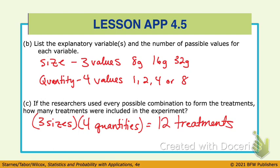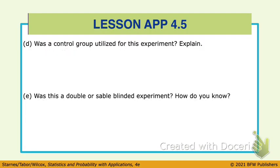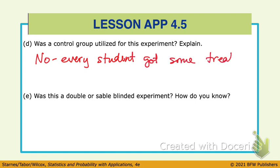Was there a control group in this experiment? No — there was no control group. Every group got some treatment. If there had been a control group, that would be students who don't get brownies — but obviously if you don't get brownies, you're not going to eat one, so we didn't need to do that.